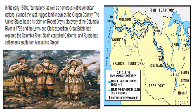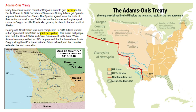Adams-Onís Treaty. Many Americans wanted control of Oregon in order to gain access to the Pacific Ocean. In 1819, Secretary of State John Quincy Adams got Spain to approve the Adams-Onís Treaty. The Spanish agreed to set the limits of their territory at what is now California's northern border and to give up all claims to Oregon. In 1824, Russia also gave up its claim to the land south of Alaska. Dealing with Great Britain was more complicated. In 1818, Adams worked out an agreement with Britain for joint occupation, meaning people from both the United States and Great Britain could settle there.